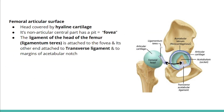The femoral articular surface is the head of the femur, which is covered by hyaline cartilage. In the femoral head, the central part — the fovea — is non-articular, and the ligament of the head of the femur attaches to this central fovea.